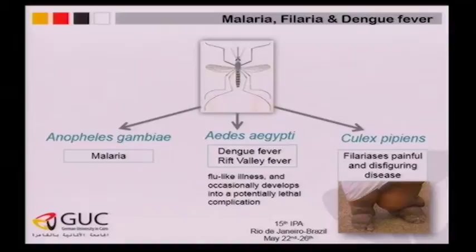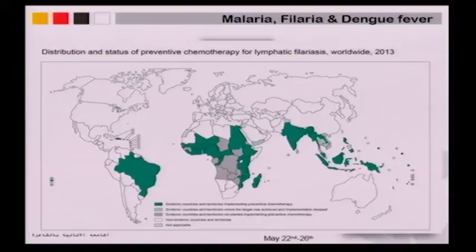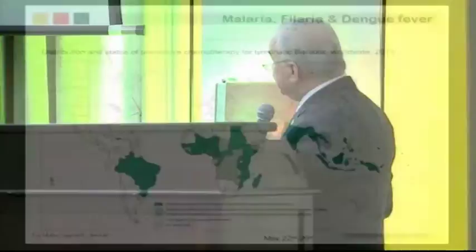Three different species of mosquito cause this great damage. Culex pipiens causes filariasis, which is a very painful and disfiguring disease. Looking at how it is distributed all over the world, unfortunately most cases exist in Africa, and Egypt still has filariasis, as well as Brazil, India, and the rest in the ASEAN region.